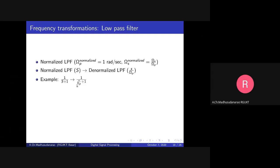Try to replace this capital S with small s by Omega P. Just for notation, we go from capital S to small s. If you replace S with s by Omega P, you get the denormalized expression. Let's verify: s equal to zero implies S equal to zero. And s equal to j times Omega P implies S equal to j times 1 — that is, S equals j1. It means the normalized frequency of 1 radian per second has shifted to Omega P radians per second in the denormalized filter.